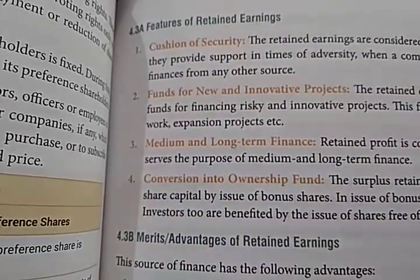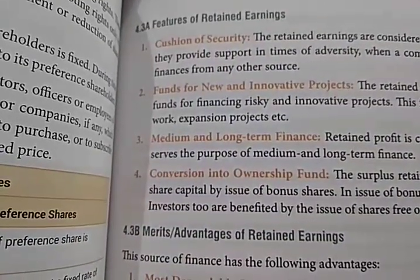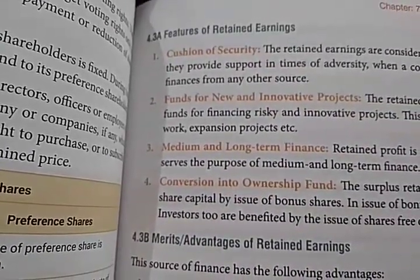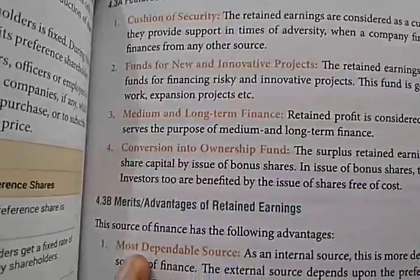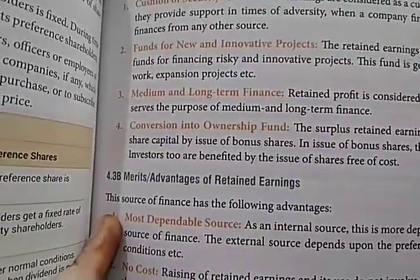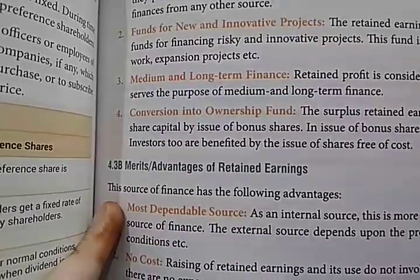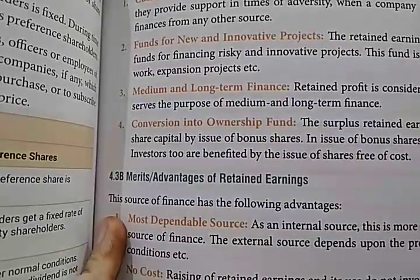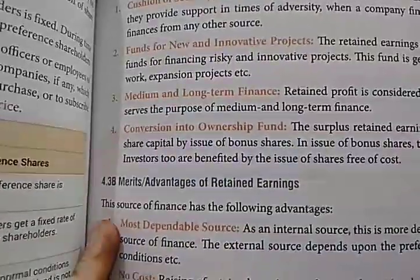Next is medium and long-term finance — retained profit is considered ownership fund and serves the purpose of medium and long-term finance. Next is conversion into ownership fund — surplus retained earnings can be converted into share capital by issuing bonus shares. In the issue of bonus shares, there is no outflow of cash from the company, and investors are also benefited by receiving shares free of cost.